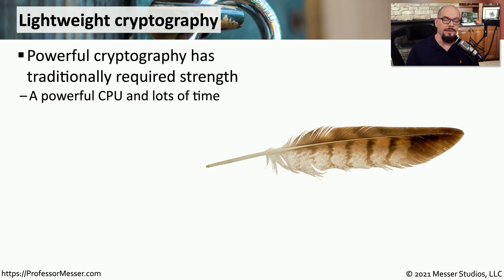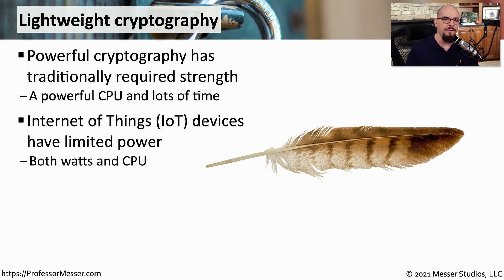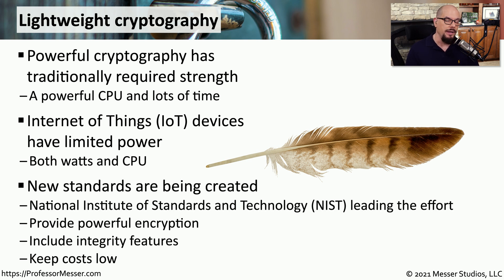Performing a cryptographic function usually requires extensive CPU and additional resources. But there's a type of cryptography focused on providing these cryptographic functions without a high-end CPU and without using a lot of power. This is lightweight cryptography, and the emphasis of this research comes from Internet of Things, or IoT, devices, which have limited CPU and limited power available. A great deal of research is being done on lightweight cryptography, led by the National Institute of Standards and Technology, or NIST, who want to find the most powerful cryptography using the least amount of power.